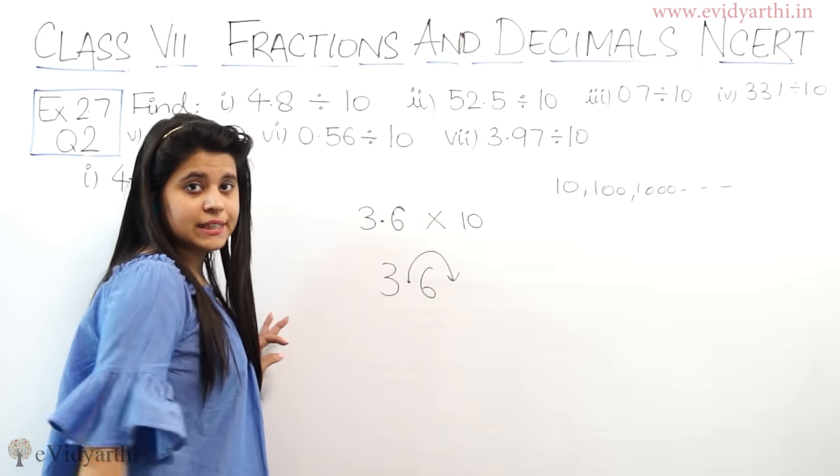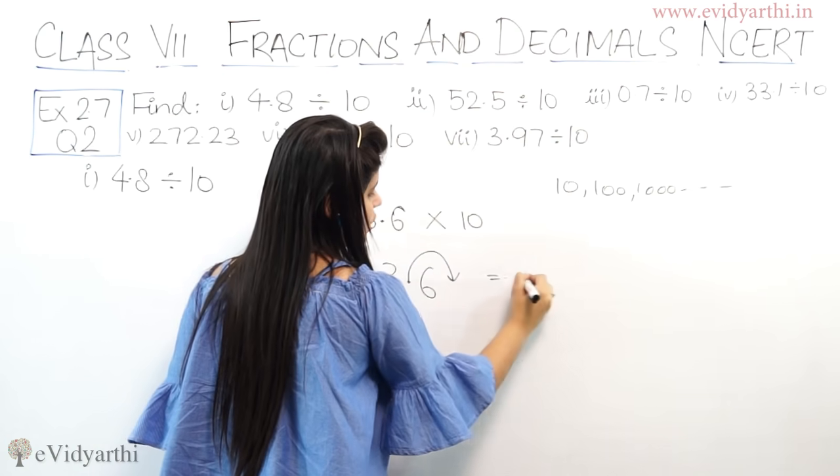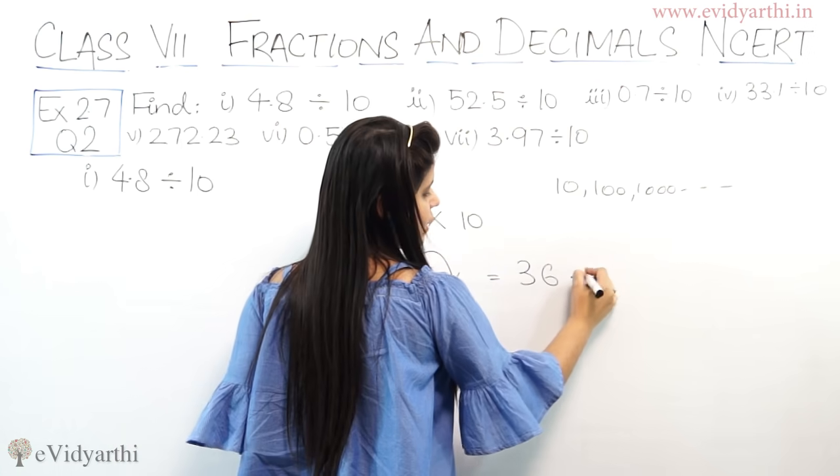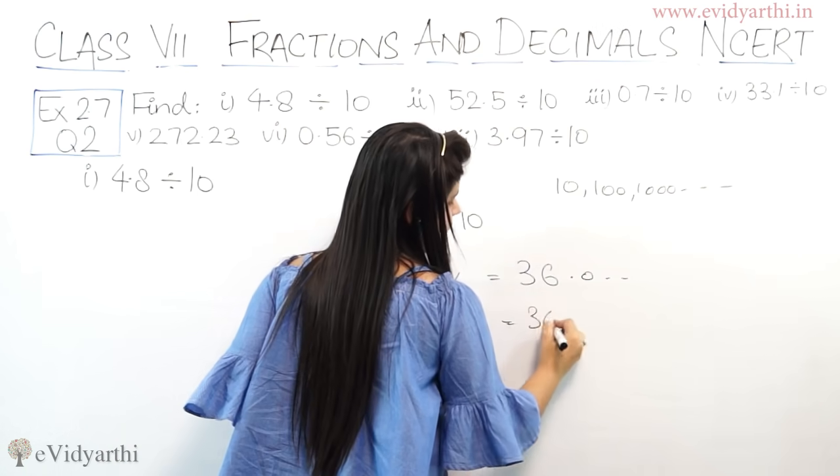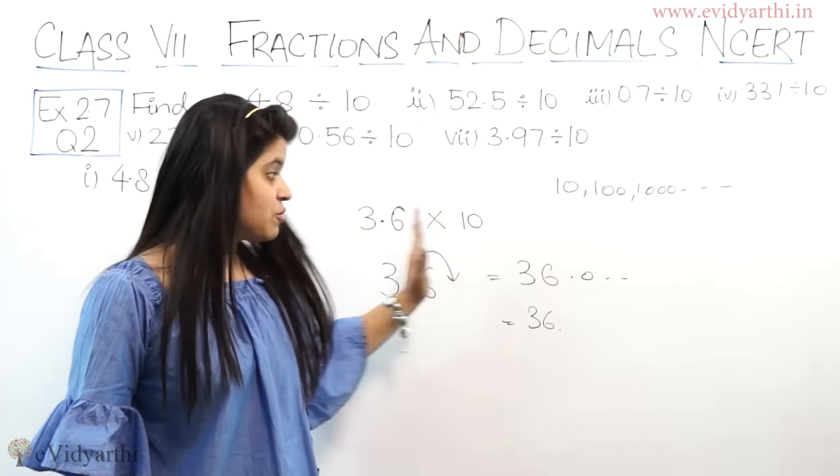So we need to find right shift, remember. So if 3.6 into 10, so this will be 36. It means 36.00 which means 36. So decimal is one place, right?